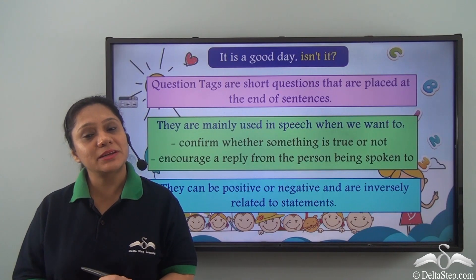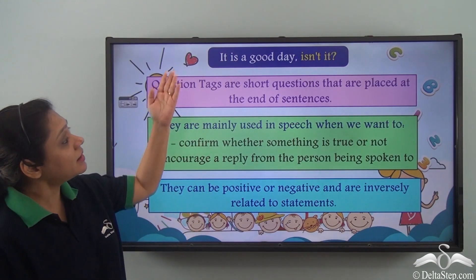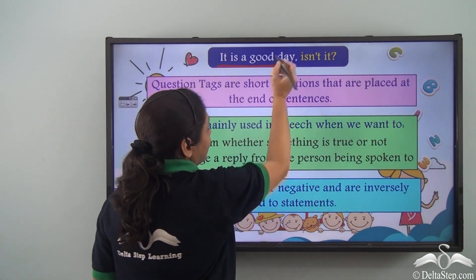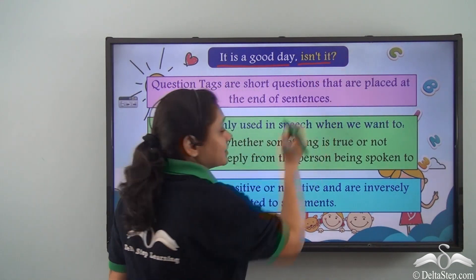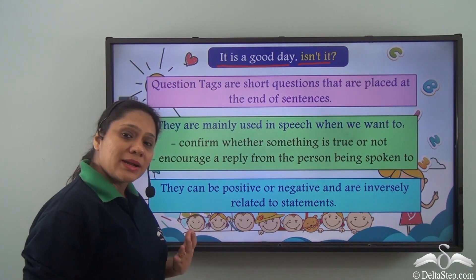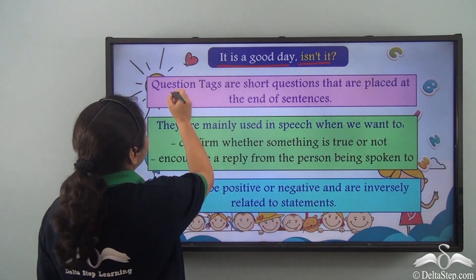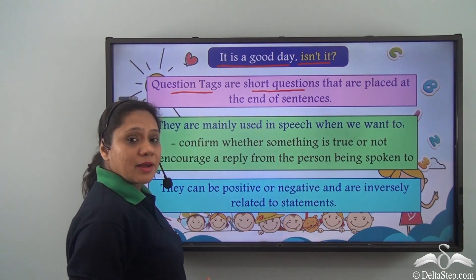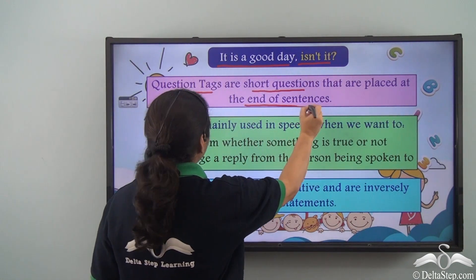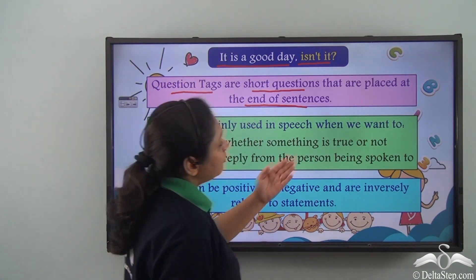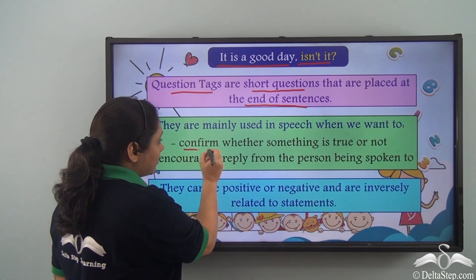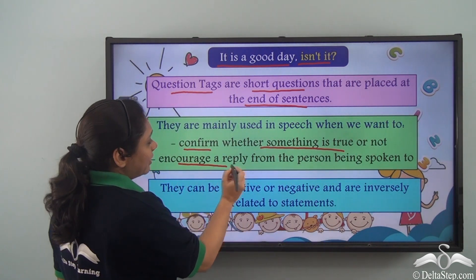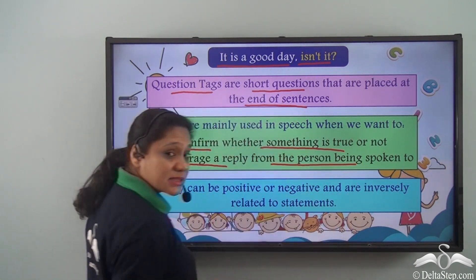We have learned that in interrogative sentences like 'It is a good day, isn't it?' — 'It is a good day' is a statement and 'isn't it' is the question tag. Now let us revise quickly: what are question tags? Question tags are short questions that are placed at the end of sentences. They are mainly used in speech when we want to confirm whether something is true or not, or to encourage a reply from the person being spoken to.